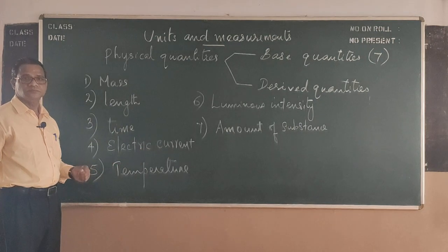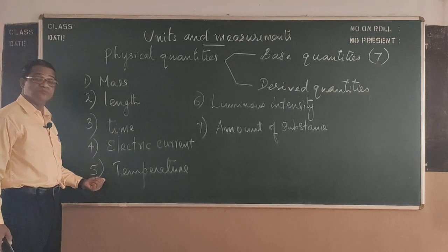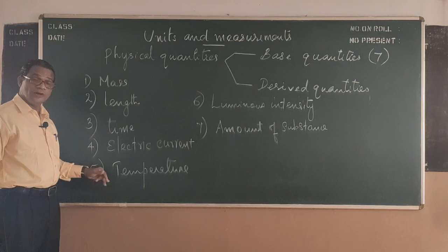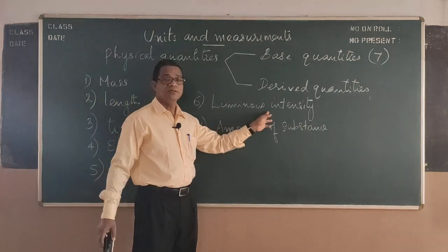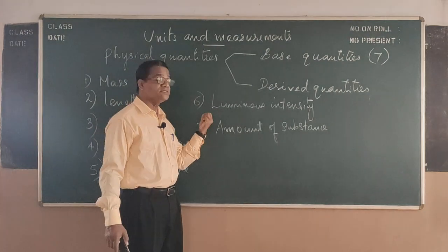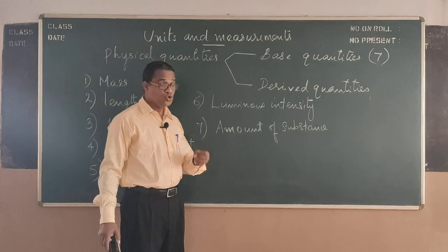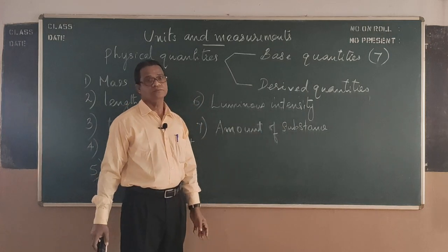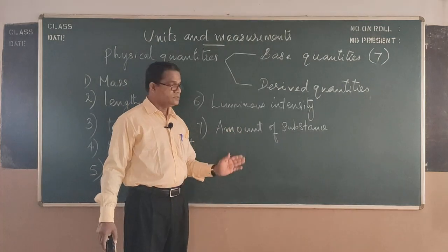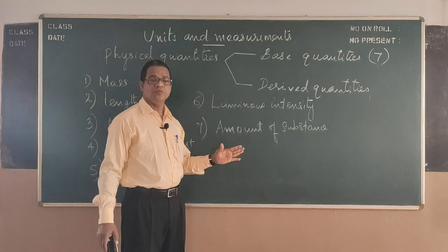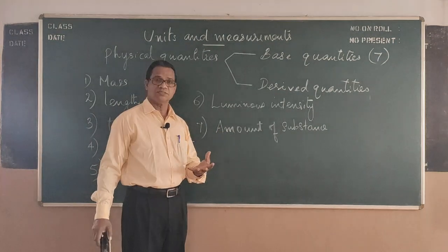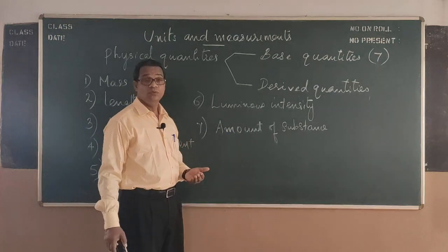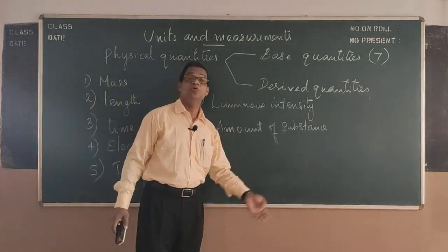Then electric current - flow of charges comes to electric current. Temperature is the state that measures the hotness of the body. Then luminous intensity comes as relating to light, and intensity of light is taken as luminous intensity. Luminous means lighting, giving out light. Then amount of substance - what is the amount of substance? This is coming in chemistry as we measure the quantity of gas. Mass of gas not measured in kilograms and all that. We take another separate unit called mole. That mole represents what you call amount of substance.